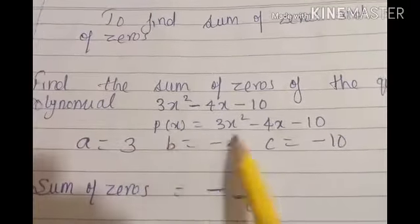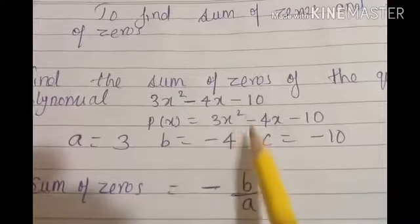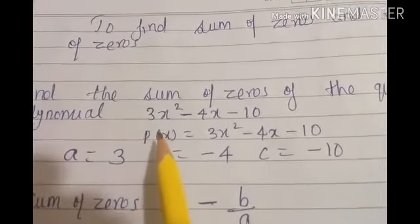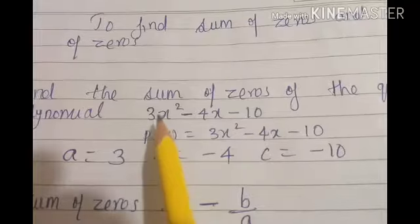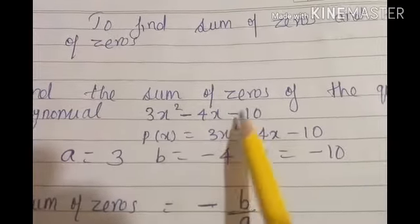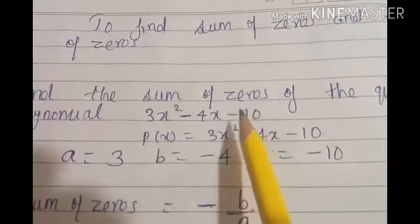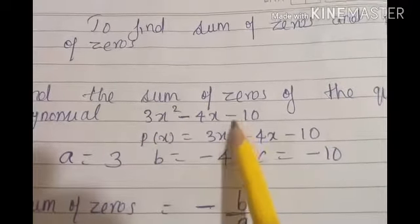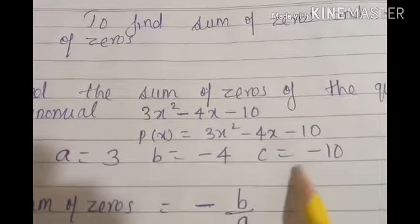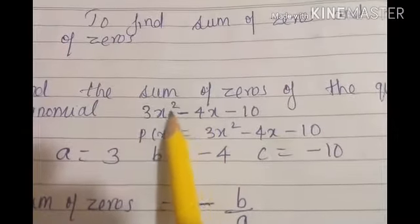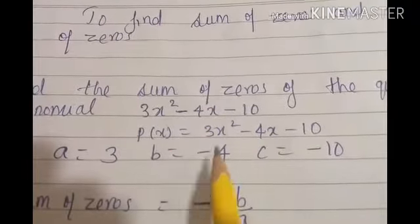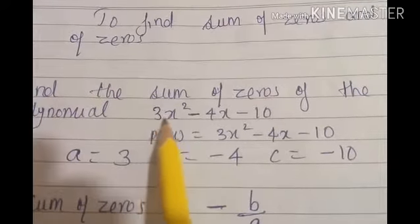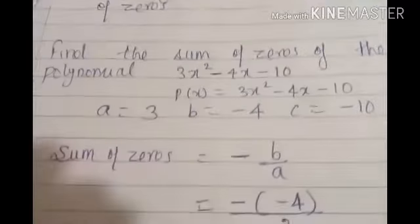Then write the values of a, b, and c. a is 3, b is minus 4, and c is minus 10. The general form of a polynomial is ax² + bx + c. Here we have minus terms, so c is minus 10 and b is minus 4. You need to write the value of b along with its sign. The value of a is 3.